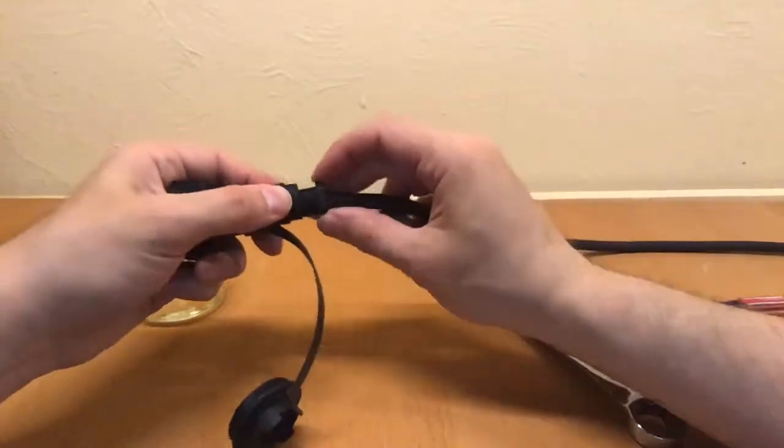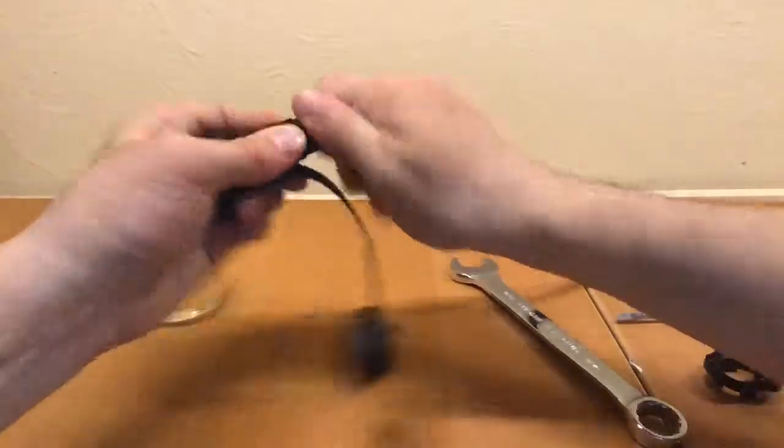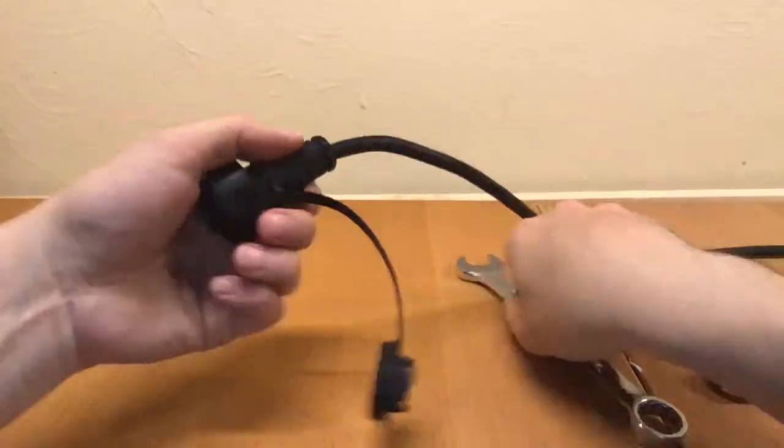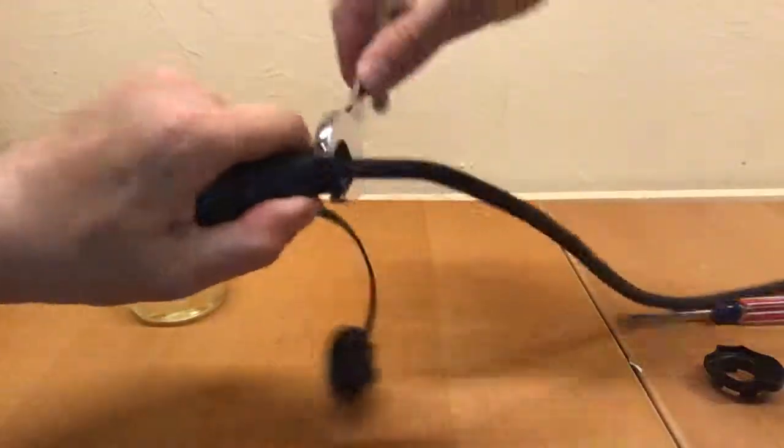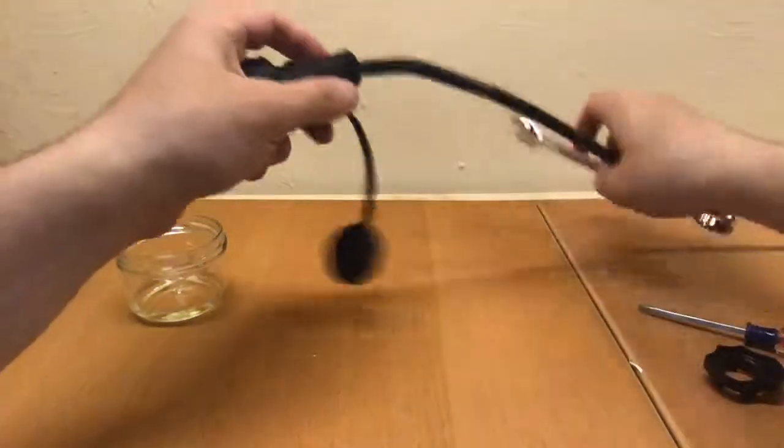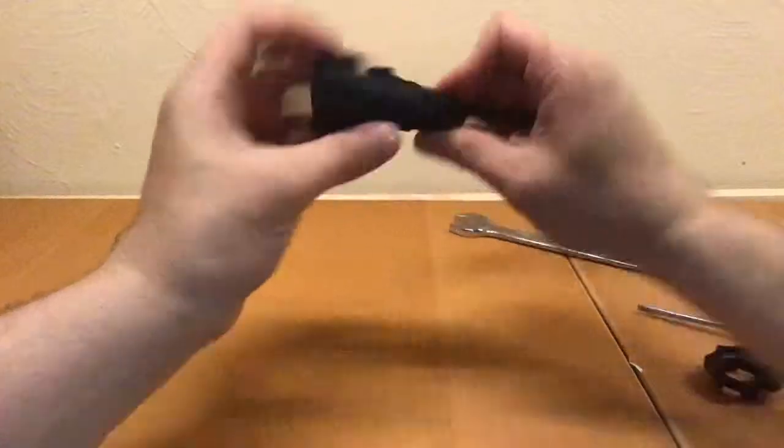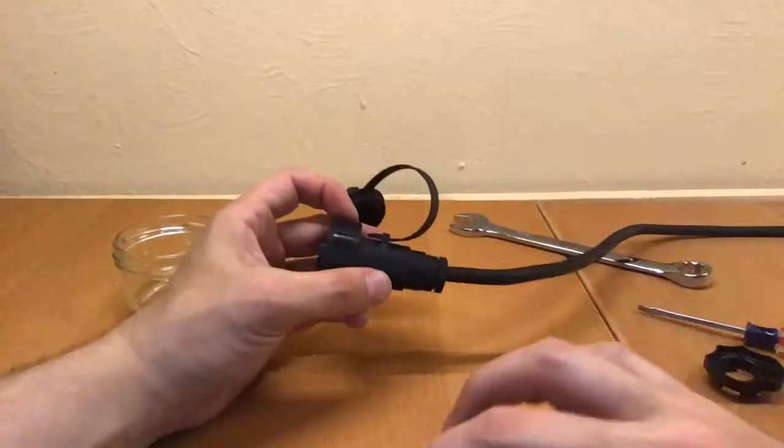And then we're going to take the screwing bolt, put it in place. Once it's there and you cannot screw it by hand anymore you're going to want to do about one and a half more turns with a wrench. And you have a fully assembled connector.